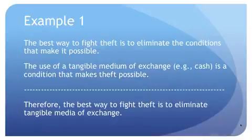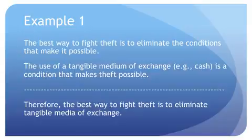Consider this argument. Premise one: the best way to fight theft is to eliminate the conditions that make it possible. Premise two: the use of a tangible medium of exchange, like cash or gold, is a condition that makes theft possible — without a tangible medium of exchange, there can't be any theft. Conclusion: therefore, the best way to fight theft is to eliminate tangible media of exchange.